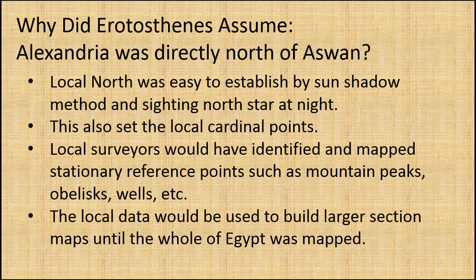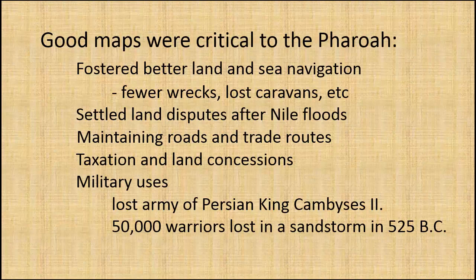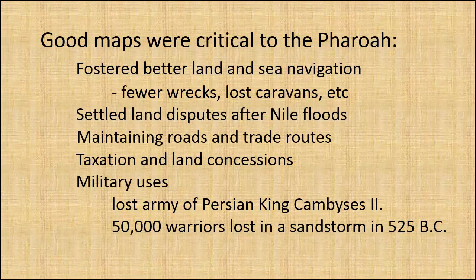Why did Eratosthenes assume Alexandria was north of Aswan, and that local noon would occur at the same time in both locations? Many possibilities. A most likely explanation. Local north was easy to establish by the sun's shadow method. When an obelisk shadow reached a minimum during the day, it was local noon, and the shadow aligned with true north. Citing the north star at night gave the same local true north direction. This also set the other local cardinal points, east, south, west, and bearings in between. The local surveyors would have identified and mapped stationary reference points, such as prominent land features, obelisks, wells, etc.